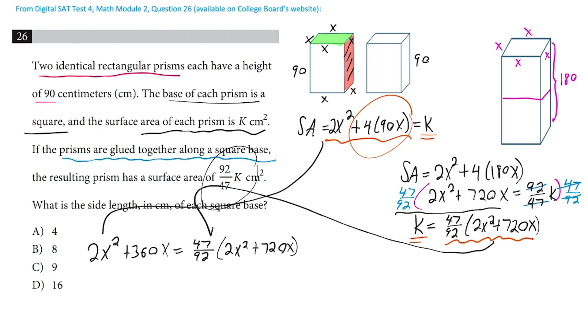Equals 47 over 92 times the 2x squared plus 720x. Now to start making better sense of this, we can go ahead and multiply. Let's just go ahead and multiply both sides of this by 92 over 47. So it's going to kind of get it out of here. It's going to cancel there and there. And we've got the 2x squared plus 720x.